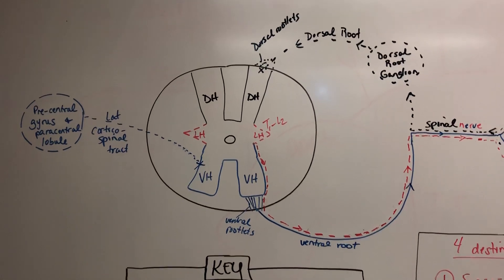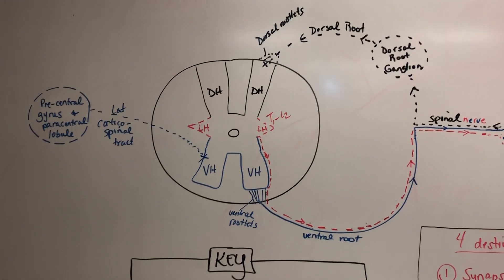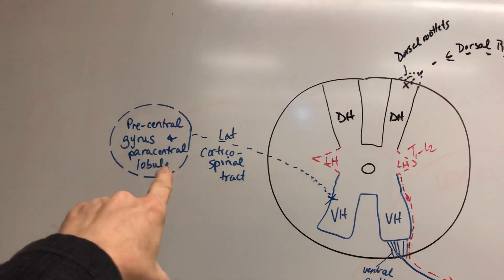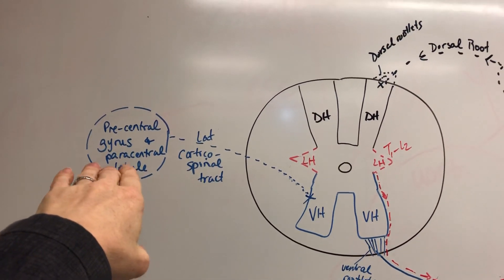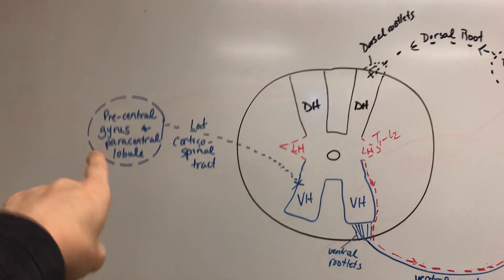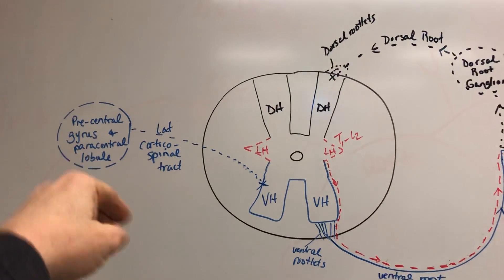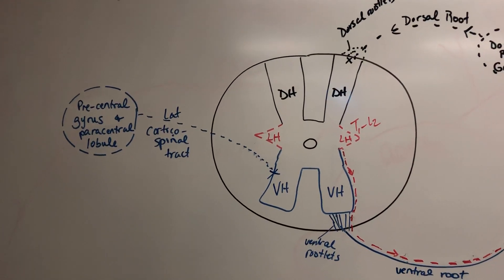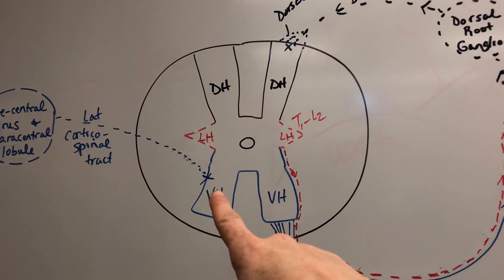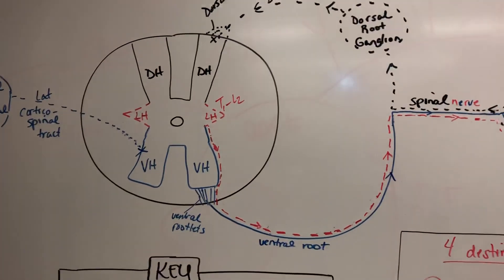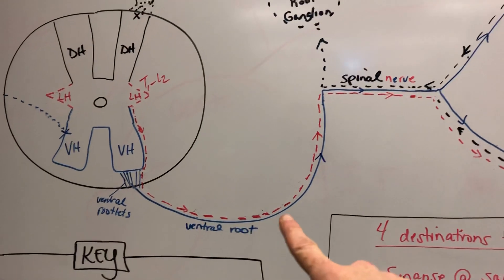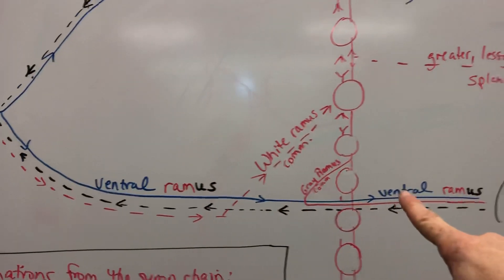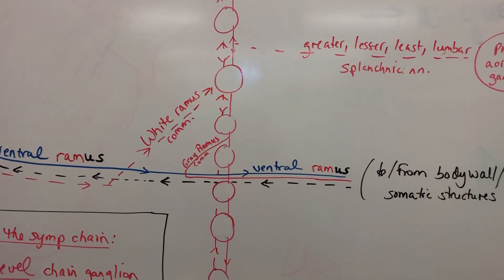Now let's talk about efferent pathways. Let's say I want to move that same arm — the deltoid at the same level of C5. We'll start on the precentral gyrus — the paracentral lobule is for lower extremity, while the precentral gyrus is for upper extremity and anything but lower. We'll travel from the precentral gyrus onto the posterior limb of the internal capsule, then travel over to the pyramids where we'll decussate to the other side of the body, and travel on the lateral corticospinal tract to the ventral horn. To head out, we travel on ventral rootlets out through the ventral root, over to our spinal nerve, and then onto the ventral ramus — which we'll call the axillary nerve when it joins up with C6 ventral ramus. We'll send that area out to the myoneural junction at the deltoid and be able to abduct our arm.